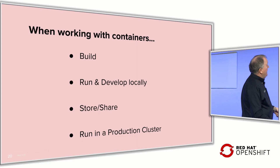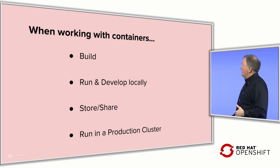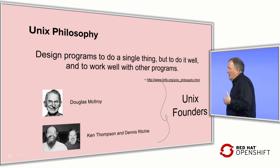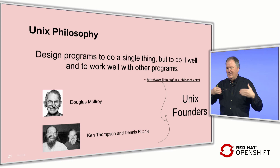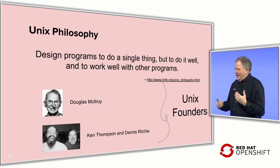What we want to do is break apart container management into four different categories. First, building container images. Second, running and playing with containers for development. Third, storing and sharing them — moving things around. And fourth, running containers in production. Each one of these steps has different security goals. Going back to the Unix philosophy of doing simple things well, we want to break the traditional monolithic approach into subcategories and subtools.